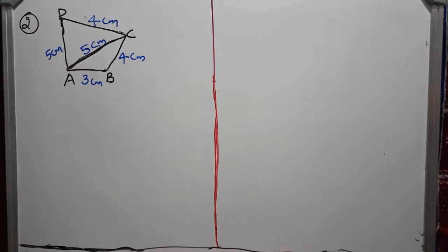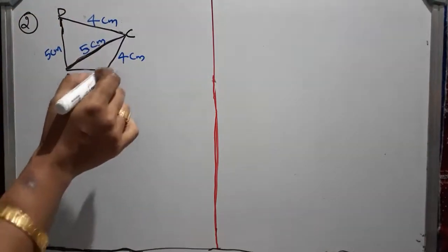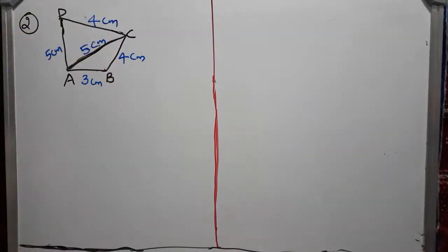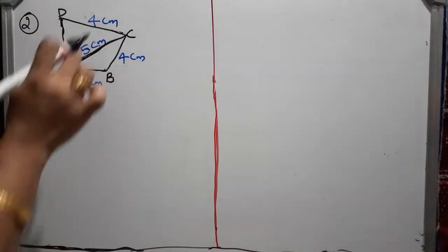DA is equal to 5 cm and AC equal to 5 cm. You can see here a quadrilateral ABCD where AB is 3, BC is 4, and CD is 4, as well as AD is 5, and diagonal AC also given as 5 cm. Find the area of this quadrilateral. You can find here two triangles.